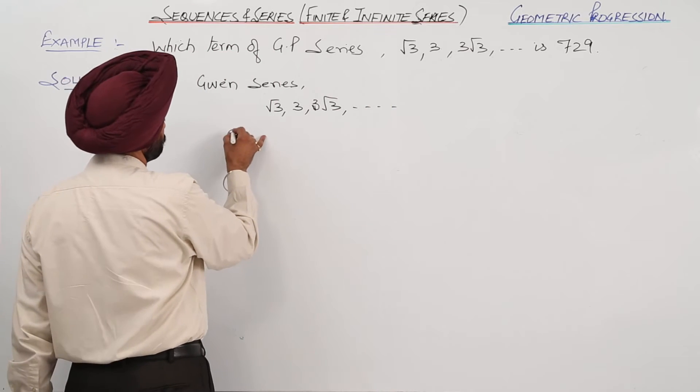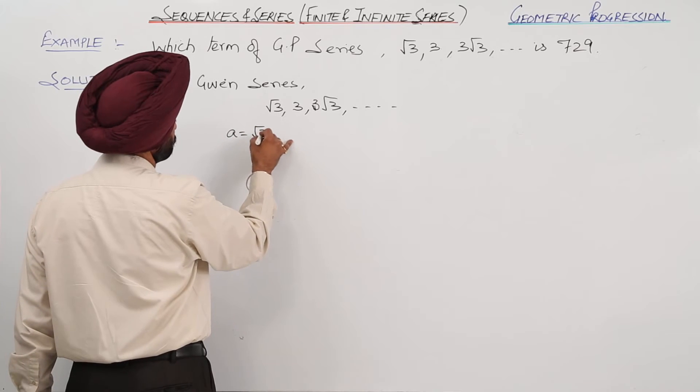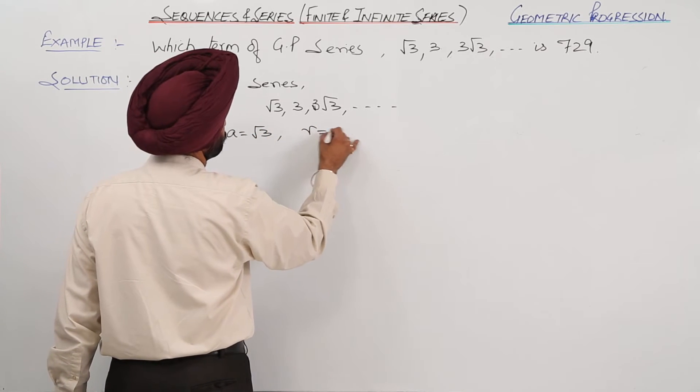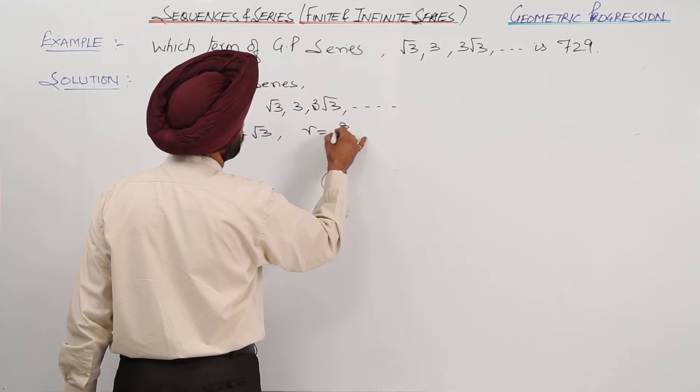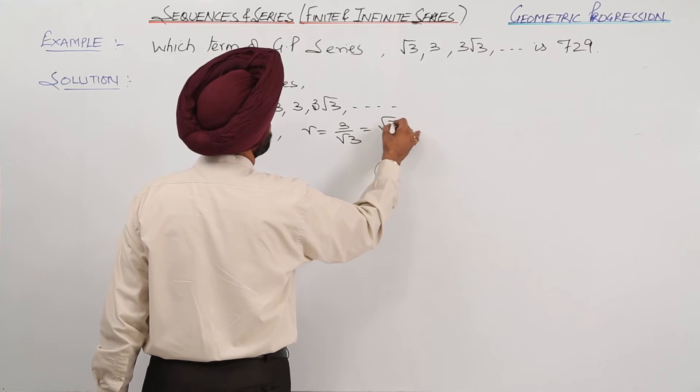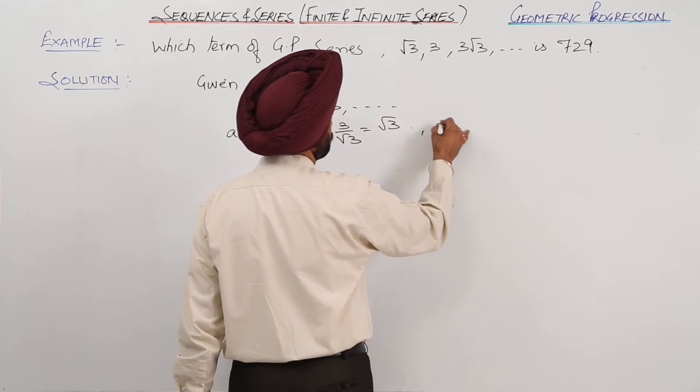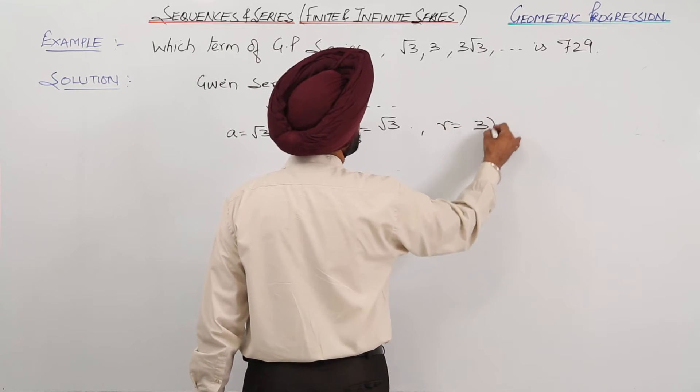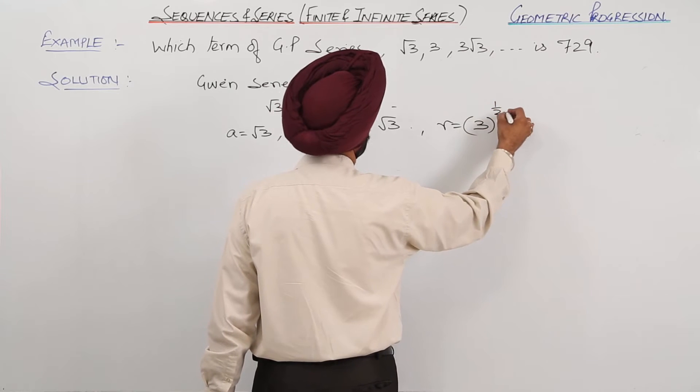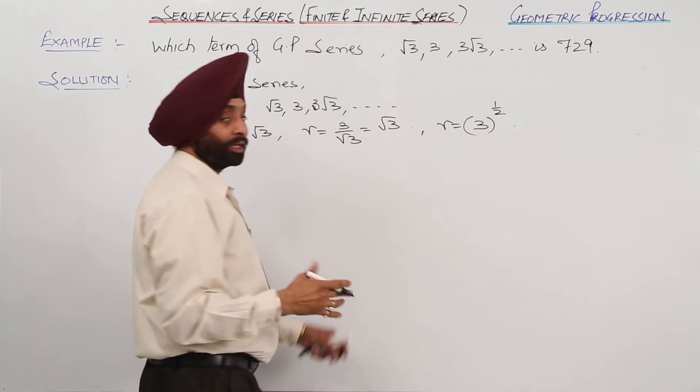We have first term a is equal to root 3, and common ratio r will be 3 upon root 3, which is equal to root 3, or you can write it as r equals 3 raised to power 1 by 2.